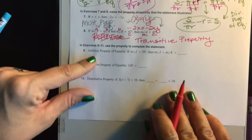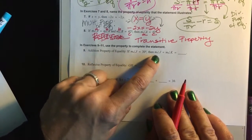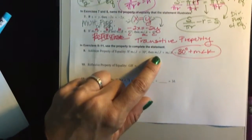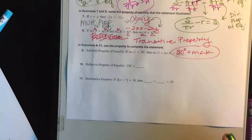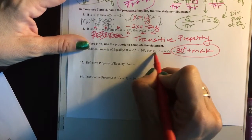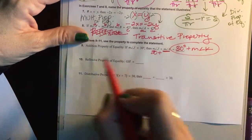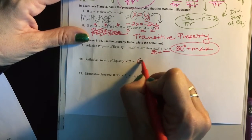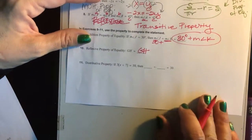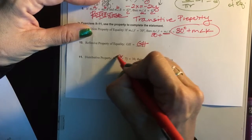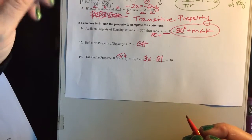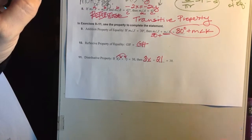Number 9 is saying use the addition property of equality. If I know that the measure of angle J is 30 degrees, then the measure of angle J plus the measure of angle K — J is 30, and we don't know what angle K is, so it must just be this. You need some more practice with properties. Reflexive: GH equals GH — it is what it is, that's what I call the reflexive property. They're saying distribute here — you guys know how to distribute. Some people wanted to go ahead and say X is 3, but it's not looking for X, just show me the distributive property.